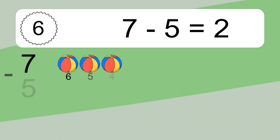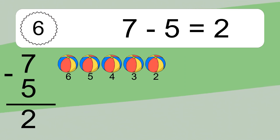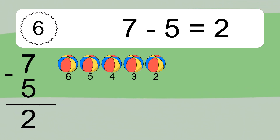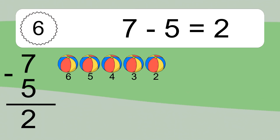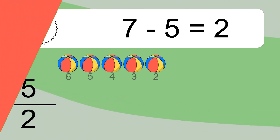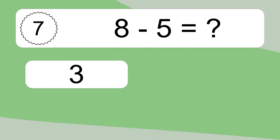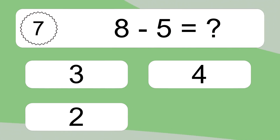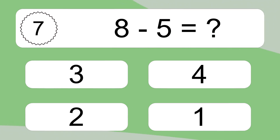7 minus 5 equals 2. Let's count it: 6, 5, 4, 3, 2. 8 minus 5 equals what?